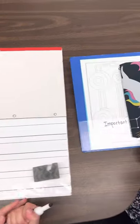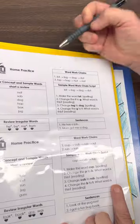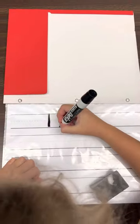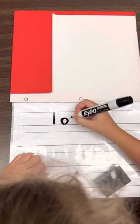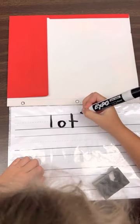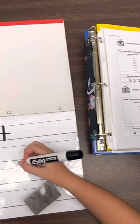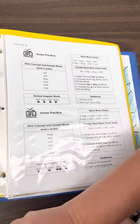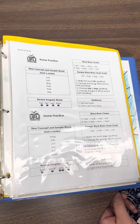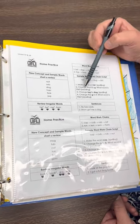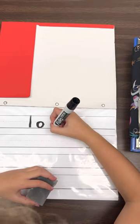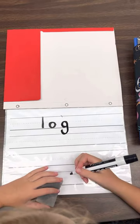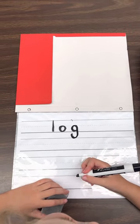And the first word I want you to write is lot. Lot. Make the word lot. Good. Okay. Now, change the T to G. So you're going to use your eraser. Change the T to G. What word is this? Log. Very good.